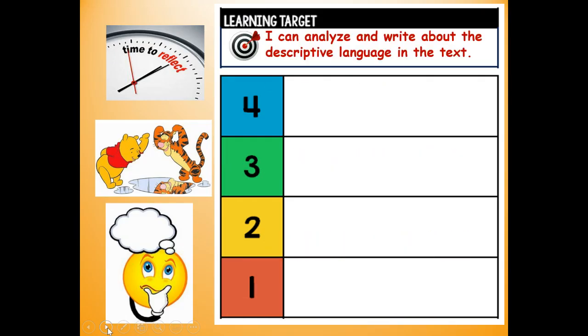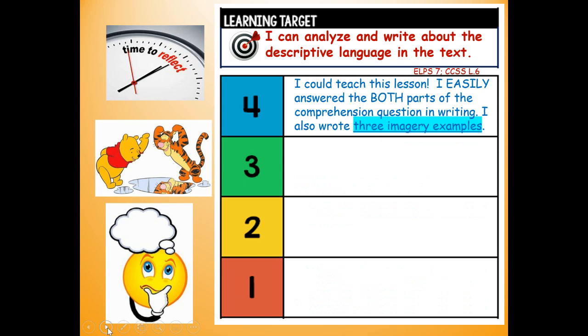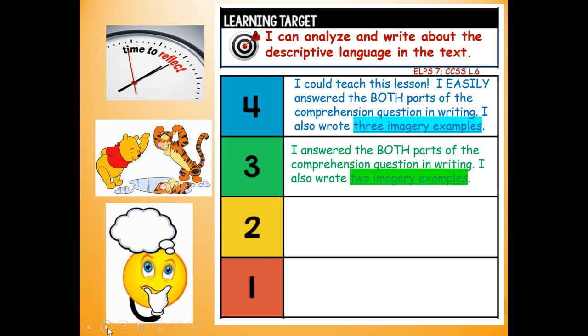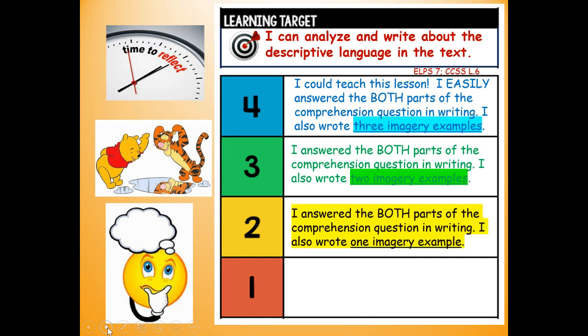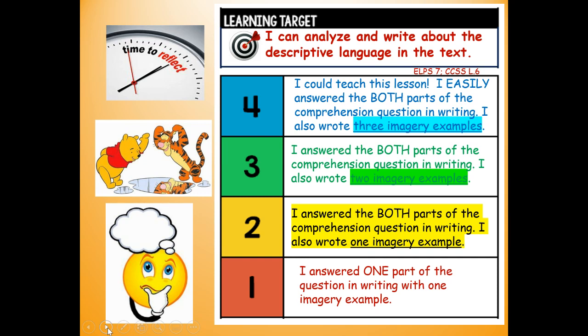Here's our reflection. At the top of your paper, write your reflection — how did you do today? Our learning target was: I can analyze and write about the descriptive language in the text. Give yourself a four if you could teach this lesson and easily answered both parts of the comprehension question with three imagery examples. A three if you answered both parts with two imagery examples. A two if you answered both parts with one imagery example. Or a one if you answered one part with one imagery example. How do you think you did — four, three, two, or one? After you've written down your reflection, thank you for doing this lesson with me. I hope you have a great day.